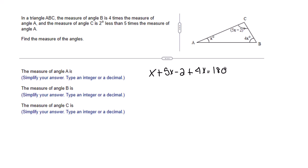Now, I like to put like terms next to each other first, so that's what I'm going to do. Let's combine like terms. X plus 5X is 6X. 6X plus 4X is 10X. That gives us 10X minus 2 equals 180.